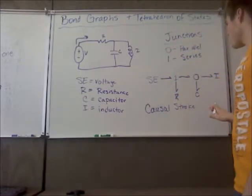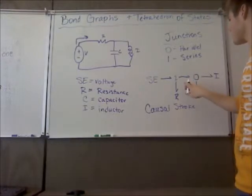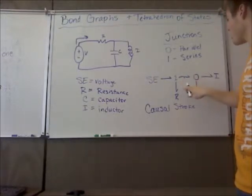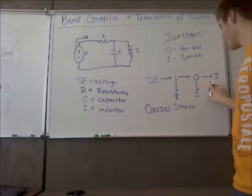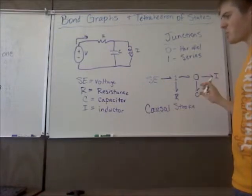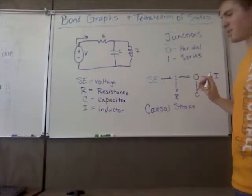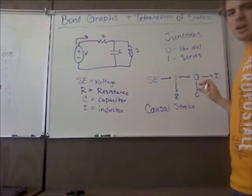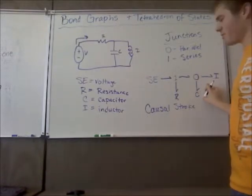And what this causal stroke shows is basically where your state variable is for your system. And the state variable basically is what you use to define your system. It's the values that are what you're trying to find for.